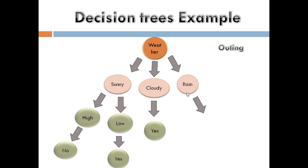For the rainy condition, if it is raining, you are not going on the outing. To summarize: in sunny weather, if temperature is high you don't go out; if temperature is low, you go out. If it is cloudy, you go out. If it is raining, there is no outing.